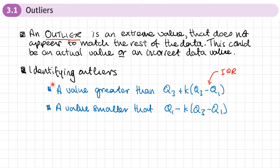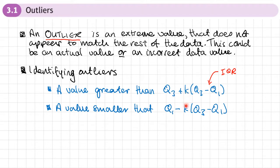We need a way to identify outliers. A common way is: any value which is greater than the upper quartile plus some multiple K of the interquartile range, or any value which is smaller than the lower quartile minus some multiple K of the interquartile range. This multiple K will be given — it's often values like 1.5, 1, or 2.